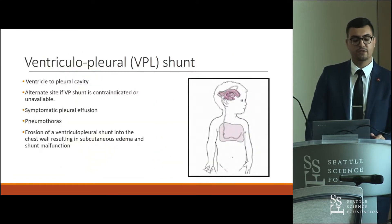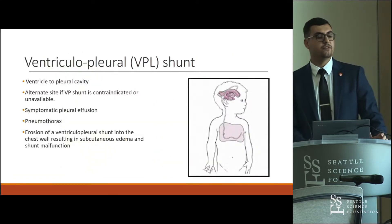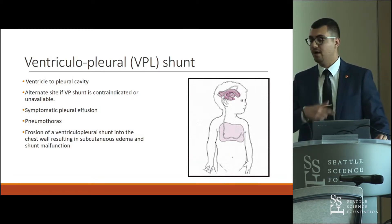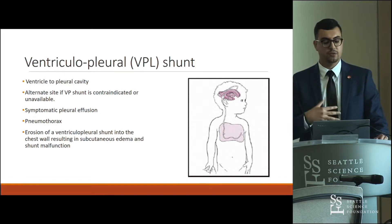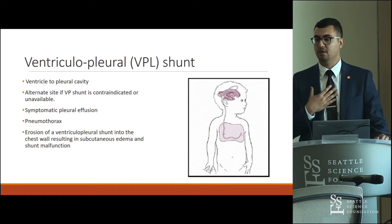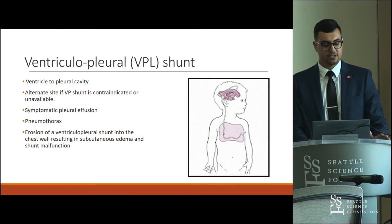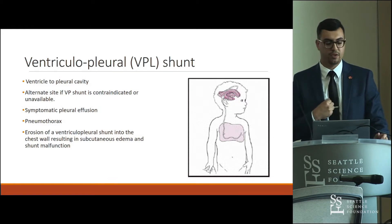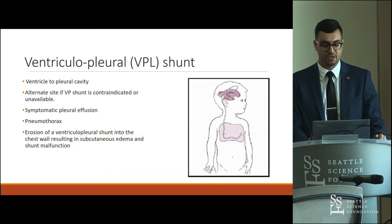The ventriculopleural (VPL) shunt is an alternative to the VP shunt, routing CSF from the ventricle to the pleural cavity — the area around the lungs — which is also capable of absorbing large volumes of fluid. Complications include pleural effusions, pneumothoraces, and erosion of the shunt through the chest wall causing subcutaneous edema and shunt failure.